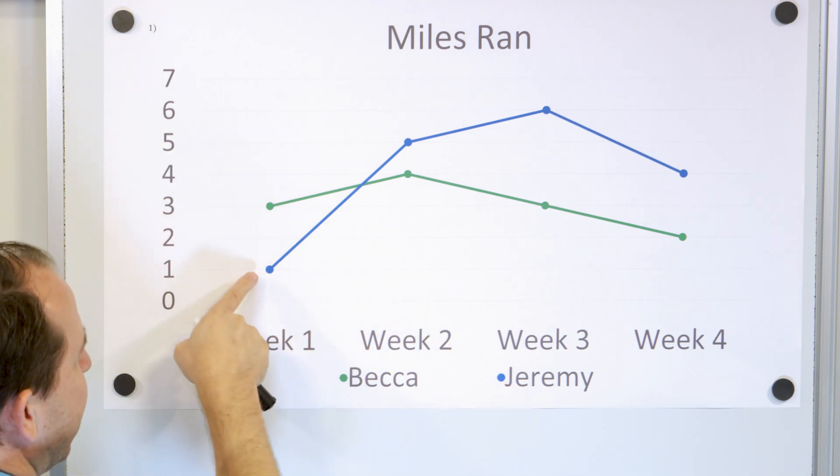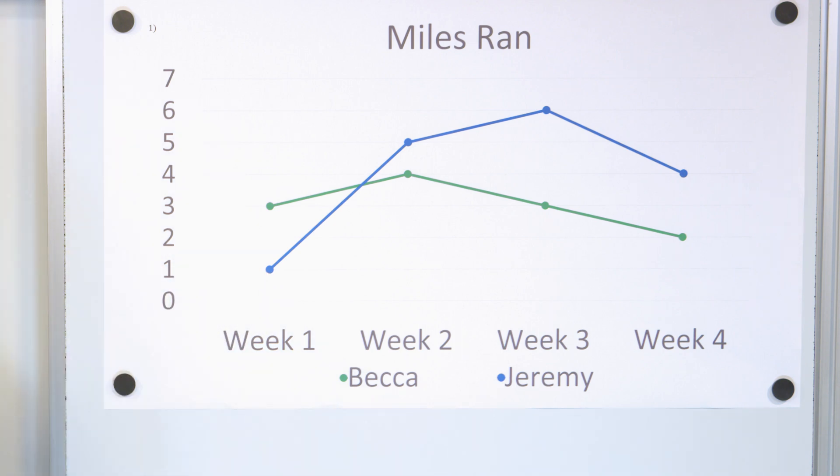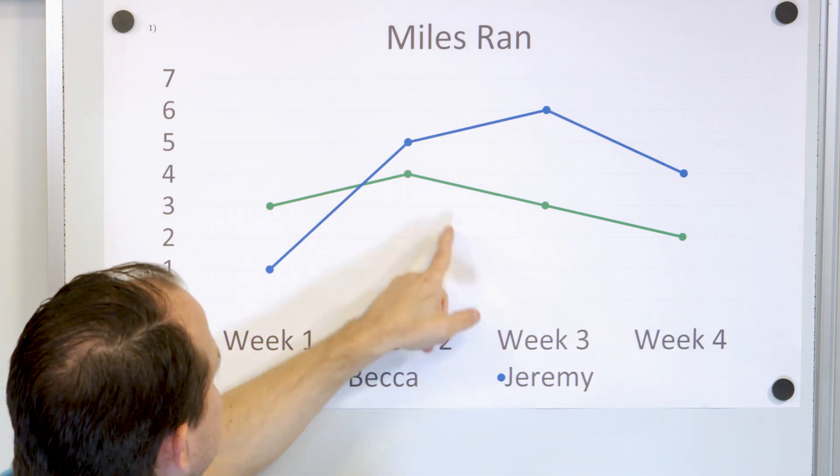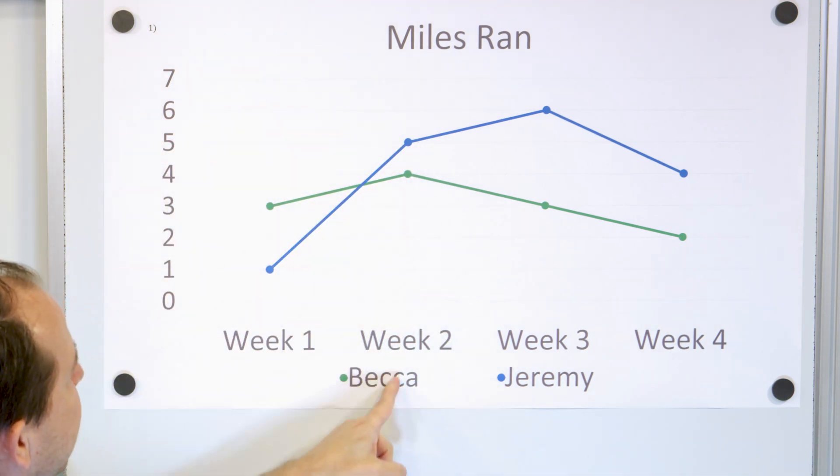And on week one, Jeremy was also running, but he only ran one mile. So on week one, you can immediately see that Becca in green ran more miles than Jeremy. She ran two more miles because he only ran one and she ran three. Now on week number two, it reversed. You see on week number two, Jeremy actually ran more miles and Becca in green actually ran one fewer miles and so on.